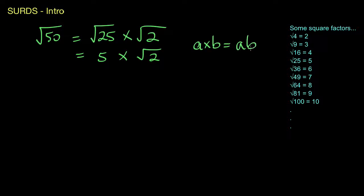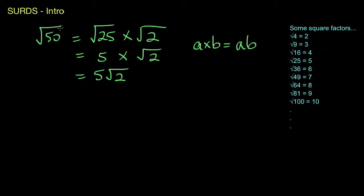Just like in algebra where a times b equals ab — we just join them together — we can do exactly the same thing here and write it as 5√2. When you see something like this it simply means 5 times the square root of 2. You could also go backwards: make 5 equal to the square root of 25, so it's the square root of 25 times the square root of 2, and you could go further and say 5√2 is equal to the square root of 50.